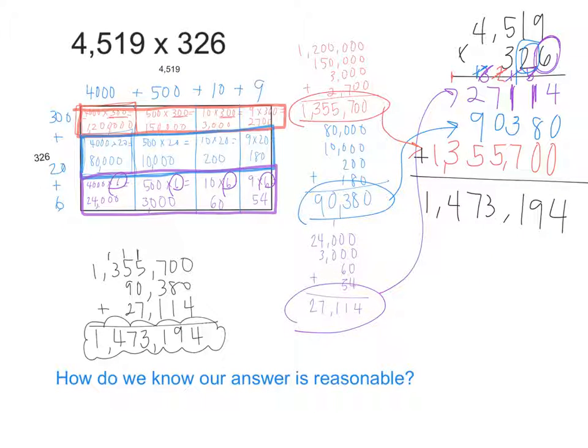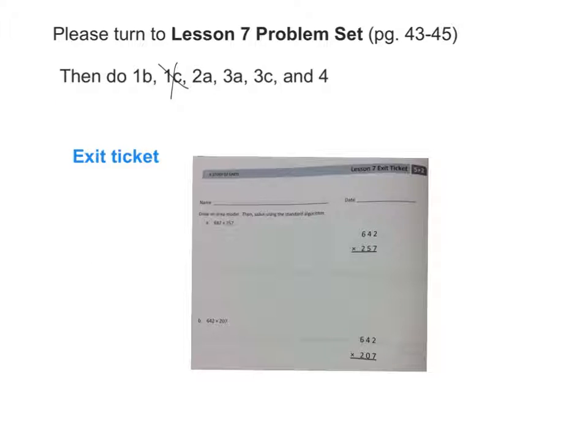Once again, we see that the area model corresponds exactly to the standard algorithm. And the rows correspond because of whichever factor it has in common. Do you guys see that? Now we know that our answer of 1,473,194 is reasonable because it's very close to the estimate that we made before. Good.